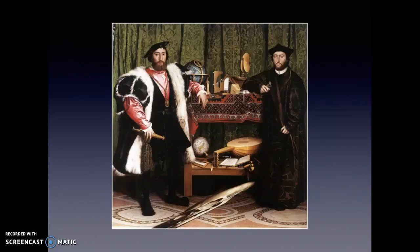The religious and political strife are reflected symbolically in the details of the painting. At the top there's a crucifix half-obscured by a green curtain, symbolizing the division of the church. There's an open book of music next to the lute with the broken string, identified as a Lutheran hymnal. The book of mathematics is open on a page of divisions, which opens with the word 'dividered.' The ages of the sitters are written in Latin on the dagger sheath for Dinteville and on the top of the bookshelf for de Selves.